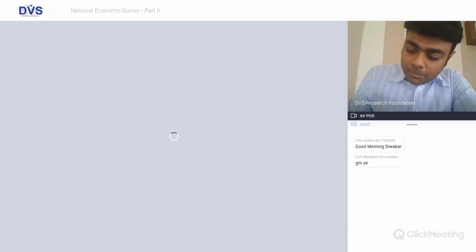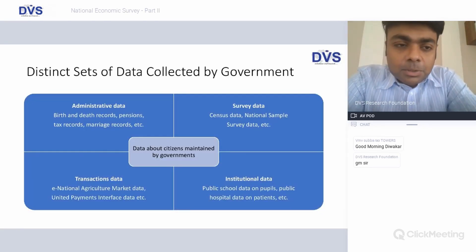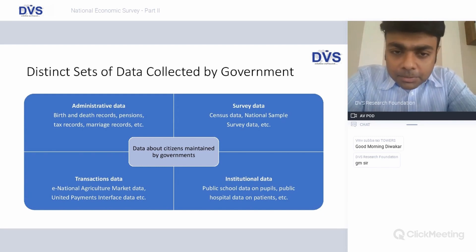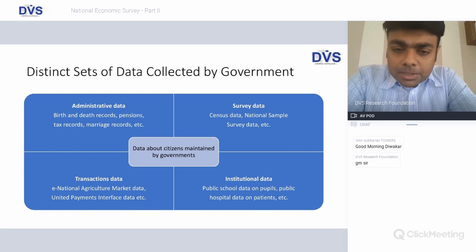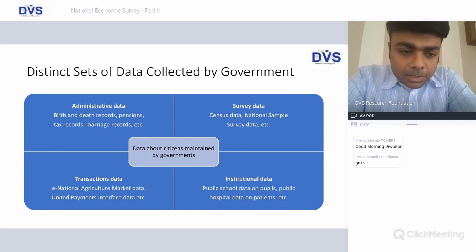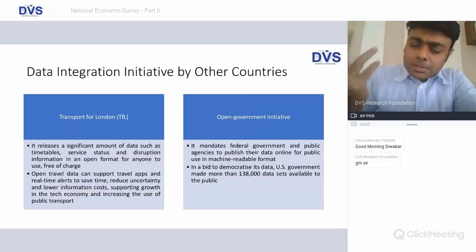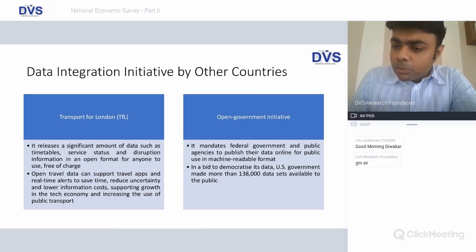Thus far, collection of this data was a challenge, but today, given significant digital dissemination, collection of data is not as serious a challenge. Some of the distinct data sets collected by the government include administrative data — birth, death, tax, and marriage records — survey data by the National Statistical Office, the census, transaction data like eNAM and UPI, and institutional data on schools and hospitals. Imagine how correlating or mixing these multiple data sets could produce outstanding outcomes.